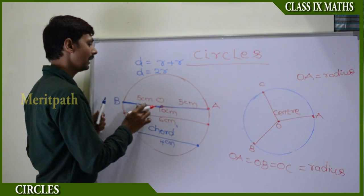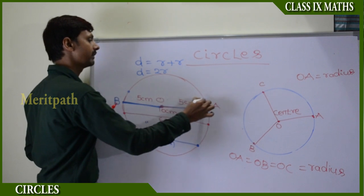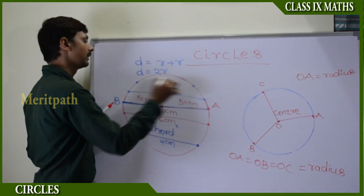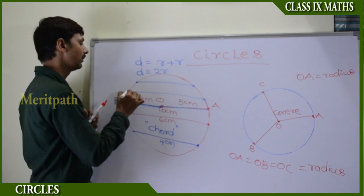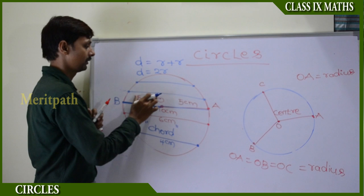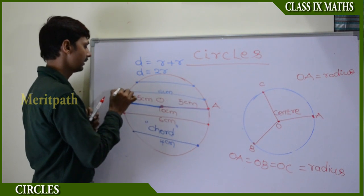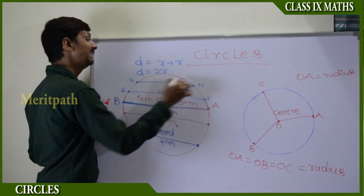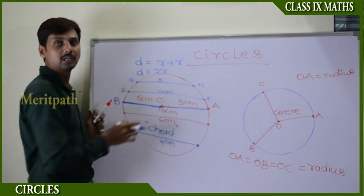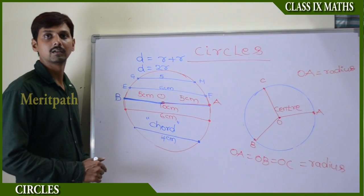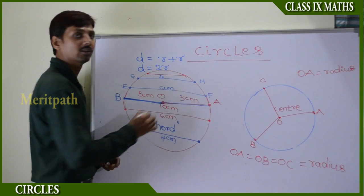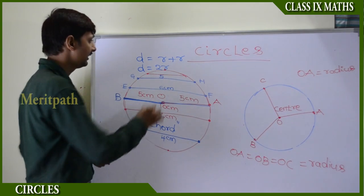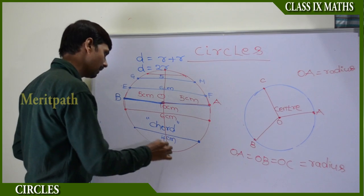When we move the chord above the diameter, the size of the chord decreases. For example, chord EF is six centimeters, and chord GH decreases further in size. As we move toward the edge of the circle, the chord gets shorter. We have observed here that infinite diameters can be drawn on the circle, and any chord passing through the center of the circle is called a diameter.